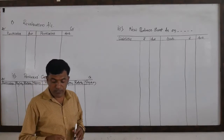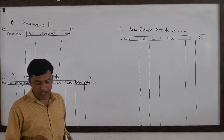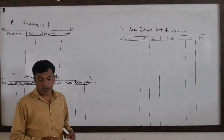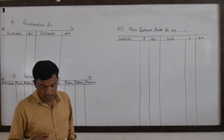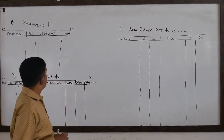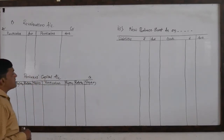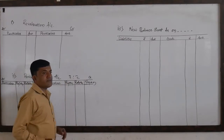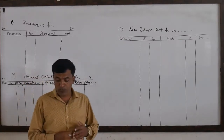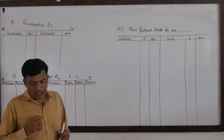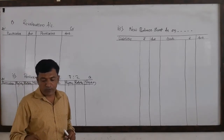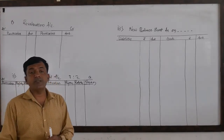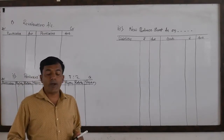In that image, dear students, there are two partners namely Rajesh and Rakesh who are partners in the firm, sharing profits and losses in the ratio of 3 is to 2. So the old ratio is 3 is to 2, meaning 3/5 and 2/5. Their balance sheet as on 31st March 2018 stood as follows, which is related to the old partners.